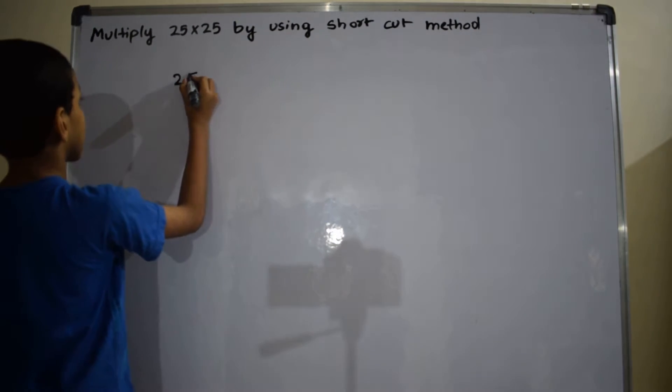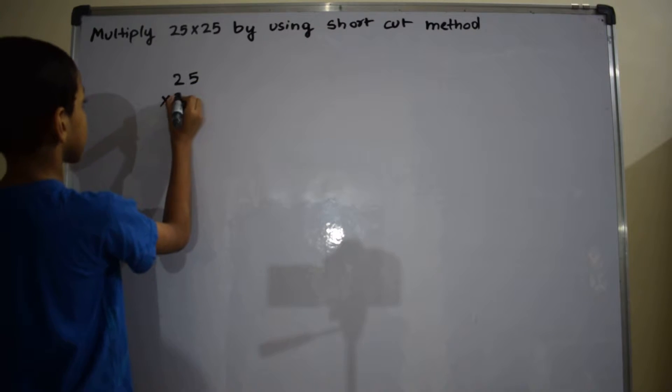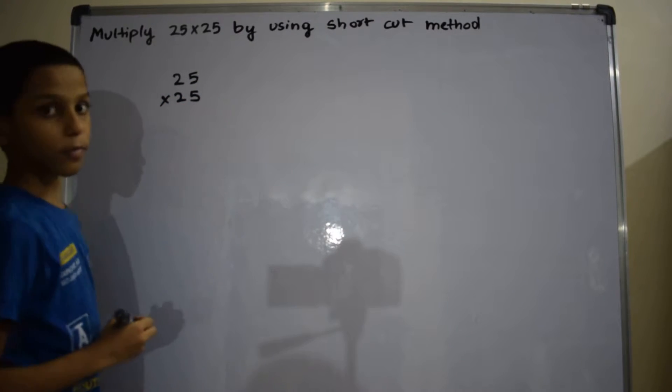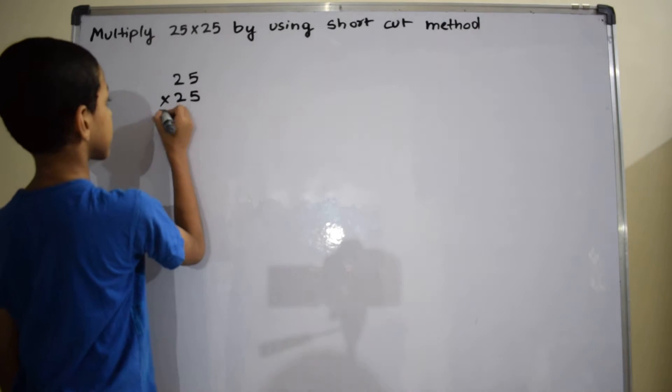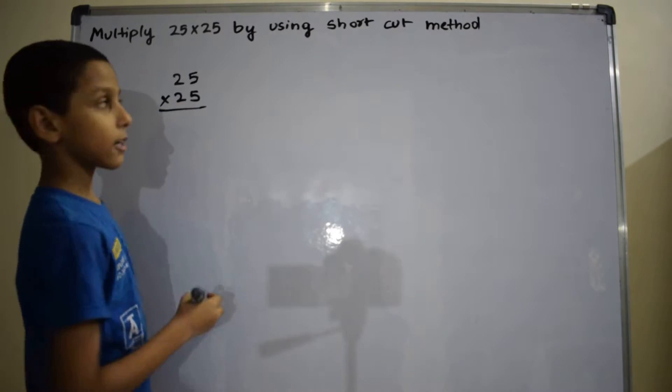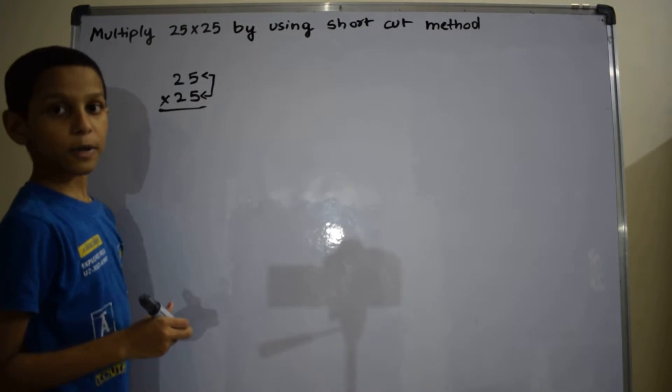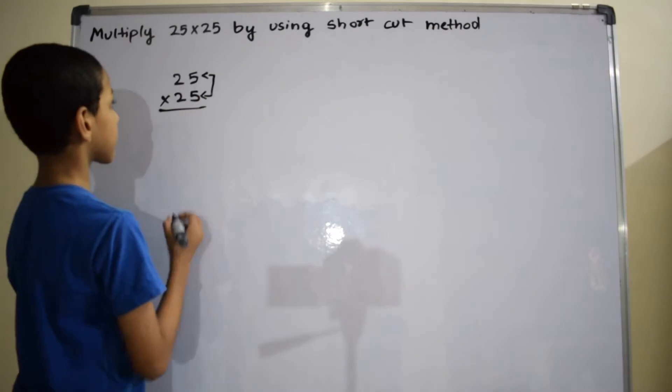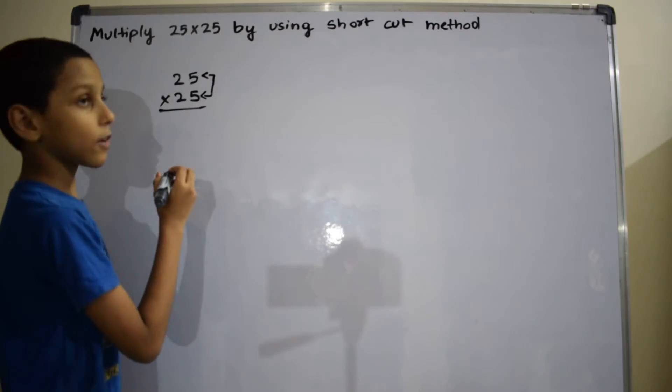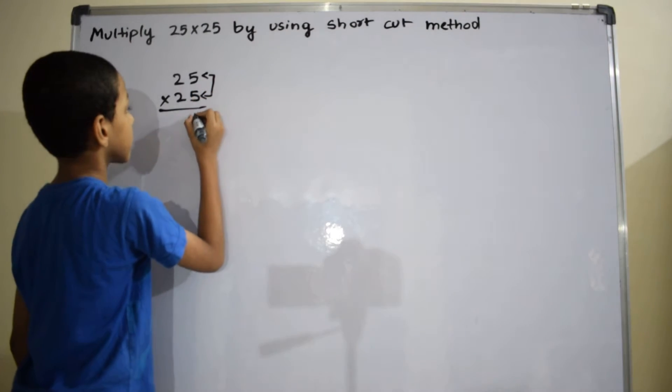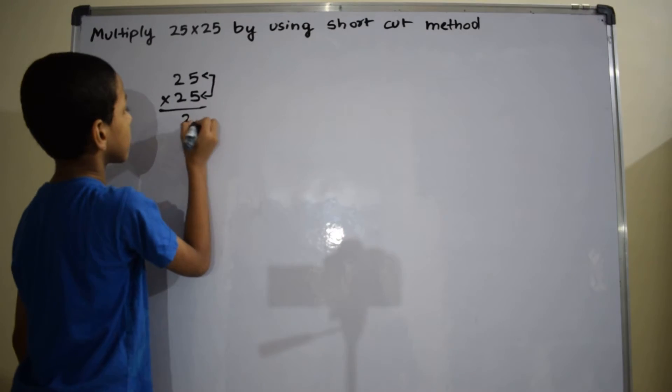25 into 25. Now our focus is on unit digits place, 5 and 5. So now we have to multiply 5 with 5. So 5 into 5 equals 25. Write here 25.